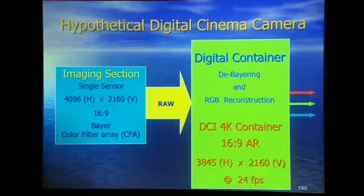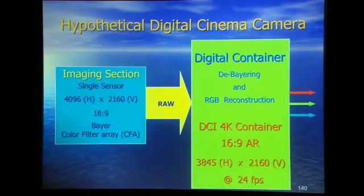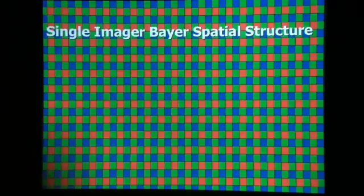According to the DCI spec for 4K 16x9 aspect ratio, the digital samples must be these specific numbers — by definition of DCI, I have to have red, green, and blue delivered at that digital sampling structure.